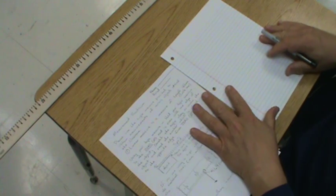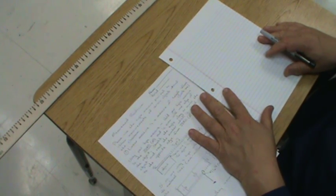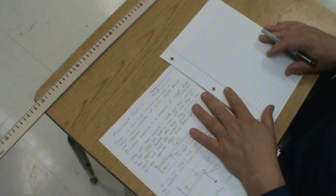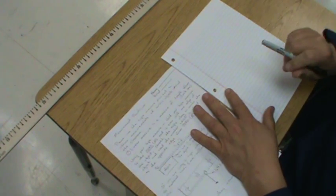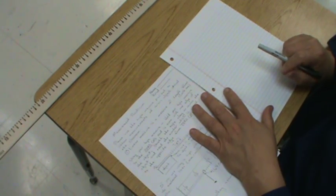The metric system is very easy to use. It just uses the number 10, and all you have to know is which way to move the decimal point when you're doing your calculations.